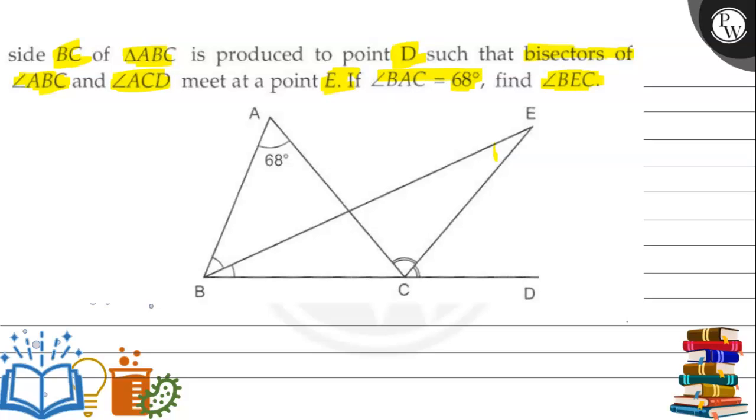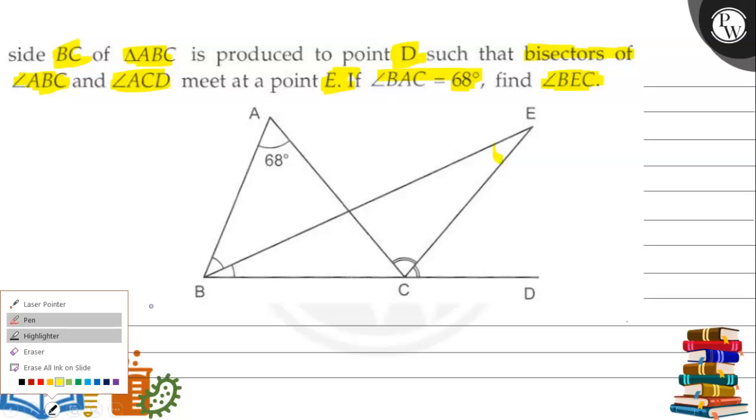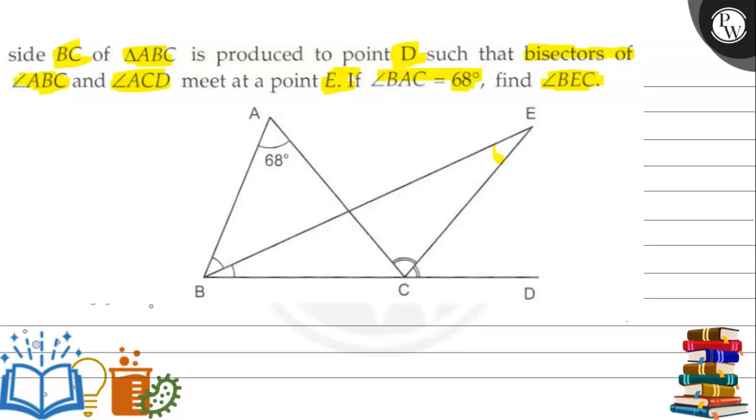BEC is angle E. We need to find this angle E. So first we can see that EB and EC are bisectors. This is given in the question, that they are bisectors. This means this angle will be half of angle B. Similarly, this angle will be half of angle ACD.